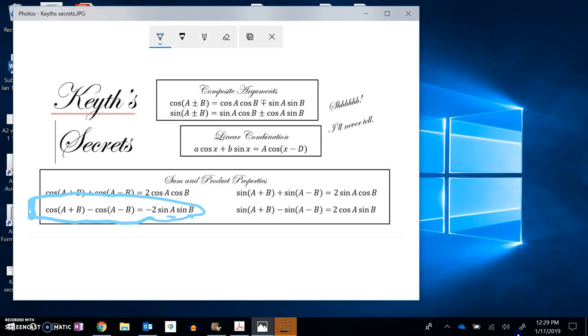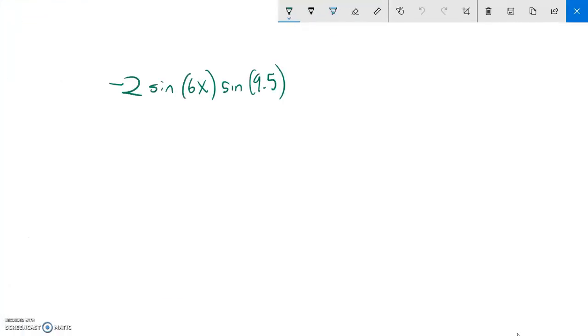Great. So this should become cosine of them added together minus cosine of them subtracted. And there it is. It's just that product is rewritten as a sum or difference. And there's nothing to solve. It's not equal to each other. So all we're doing is just rewriting the form.